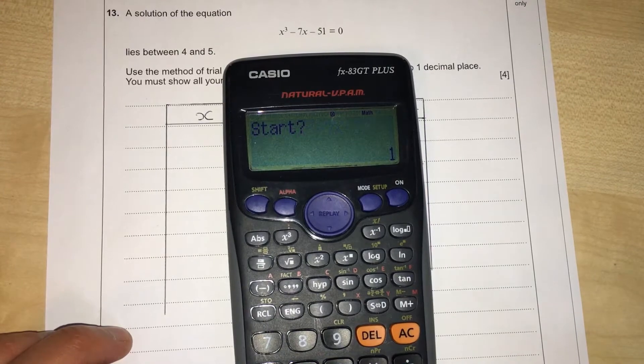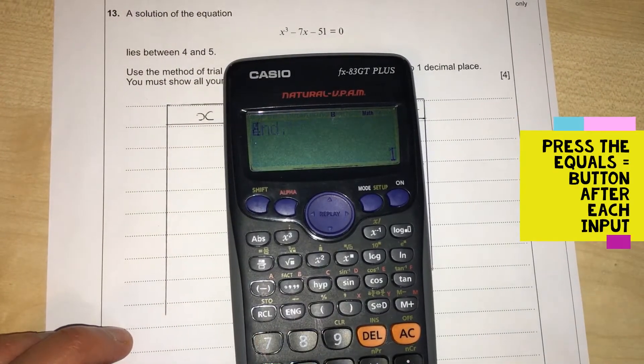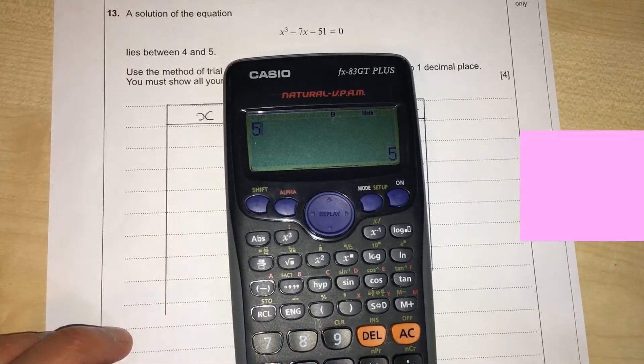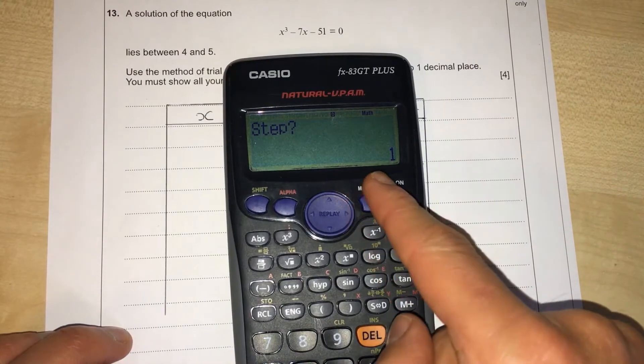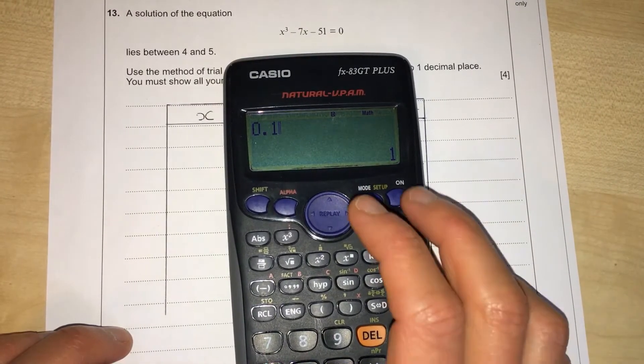We press equals. We want to start at 4, we want to end at 5, so we type that in. We press equals after each input, and we want to go up in steps of 0.1 because we want the answer to one decimal place.